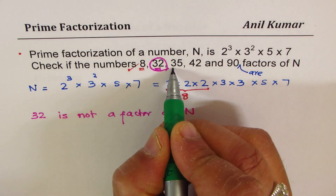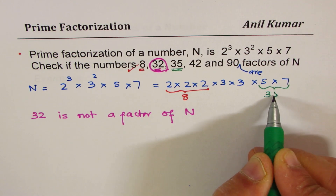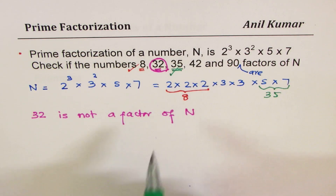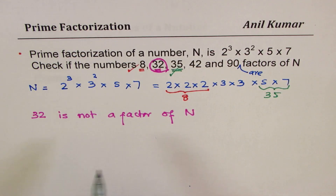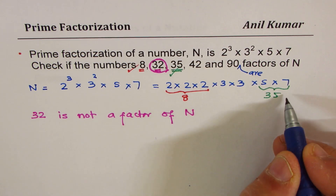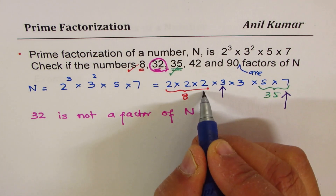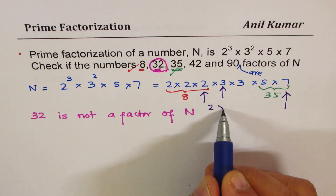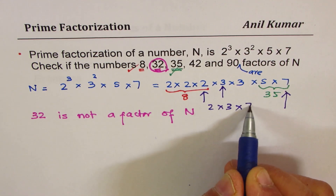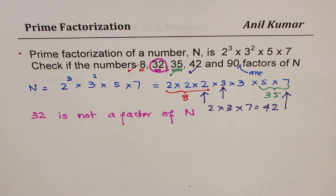Let's see if we can make 35. Well, 7 times 5 is 35, and we have both 5 and 7 available, so 35 is a factor. How about 42? 42 is 6 times 7. Do we get 6? Yes — 2 times 3 times 7 will be 42, and therefore 42 is also a factor.